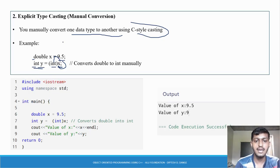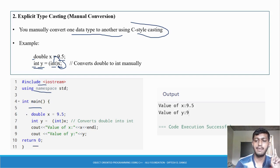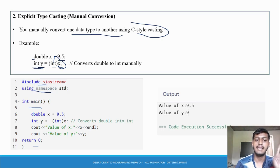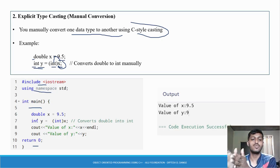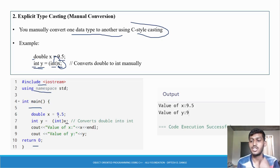Looking at the full code: I included the library, used namespace standard, declared the main function returning integer. I declared double x equal to 9.5, then declared integer y and assigned (int) x to it — converting double x into integer. This is the syntax for explicit type casting.